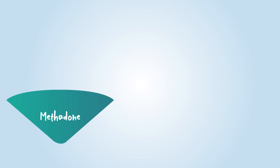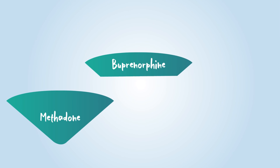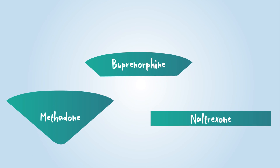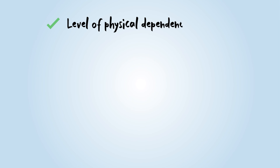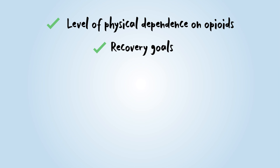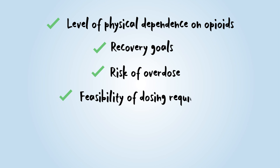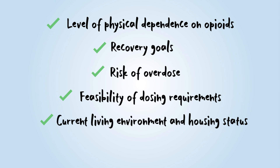When helping someone choose which, if any, medication is appropriate for the treatment of opioid use disorder, multiple factors should be considered. These include level of physical dependence on opioids, recovery goals, risk of overdose, feasibility of dosing requirements, current living environment and housing status, and storage options for medication.